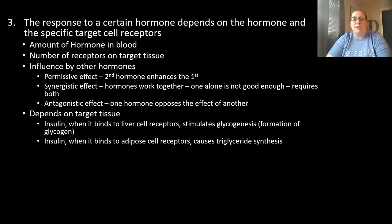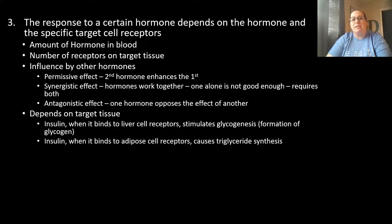Response also depends on the target tissue. For example, when insulin binds to receptors on liver cells, it triggers glycogenesis — taking in extra glucose from the blood and storing it as glycogen. But when insulin contacts receptors on adipose (fat) cells, it causes triglyceride synthesis, taking in fats and storing them. The hormone was the same, but the effects were different because of the cell type and receptor present.